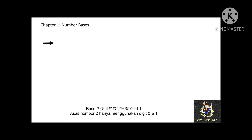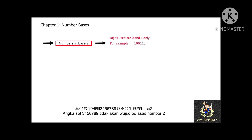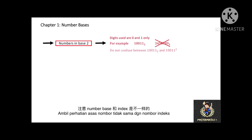For numbers in base 2, the digits used are 0 and 1 only. For example, 100 and 11 in base 2. You won't see other numbers such as 3, 4, 5, 6, 7, 8, or 9 — only 0 and 1 in base 2. And do not confuse between base and the index number, because they are different.